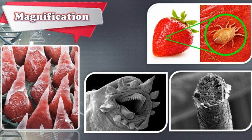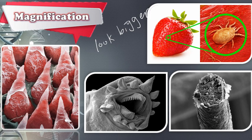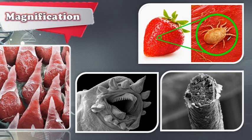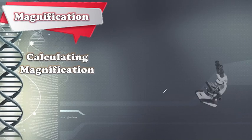This nice and delicious strawberry — if you magnify it, you may find something unpleasant on it, and that is why we should wash our fruits. So what is magnification? Magnification is to make something look bigger. It is not to make something bigger — it is still the same size, but we make it look bigger.